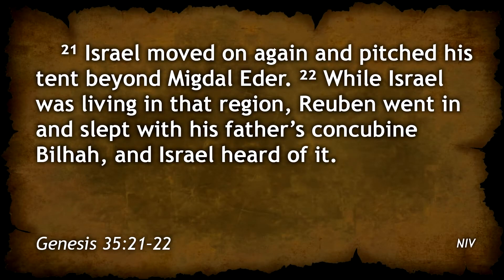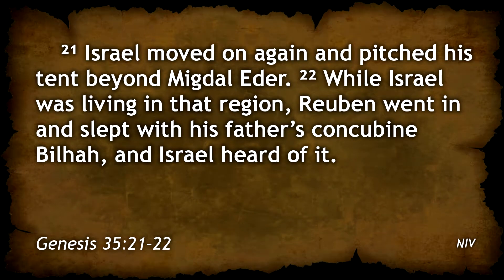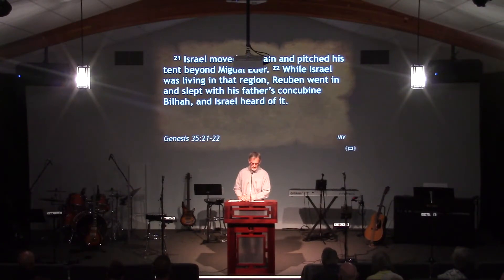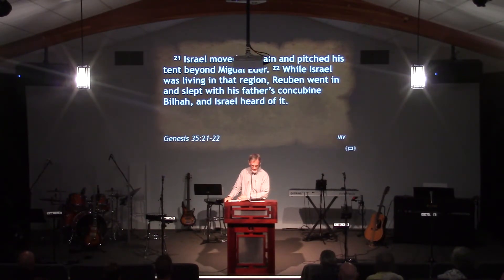Jacob moved on and pitched his tent beyond Migdal Eder. While Jacob was living in that region, Reuben went and slept with his father's concubine Bilhah, and Jacob heard of it. More suffering visits Jacob. Reuben, his firstborn son, betrays him in one of the most unimaginable ways — an incestuous relationship with Jacob's concubine Bilhah, who had been the personal servant of Rachel. Bilhah was the mother of Reuben's brothers Dan and Naphtali.